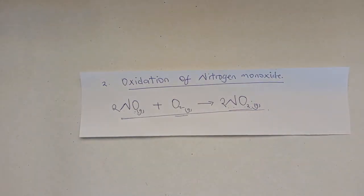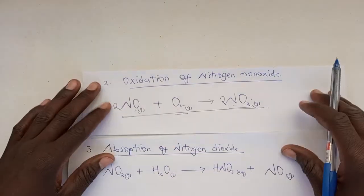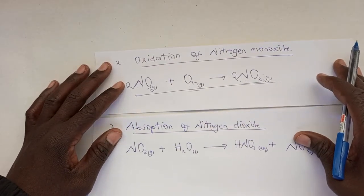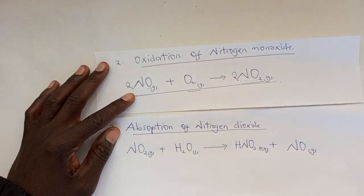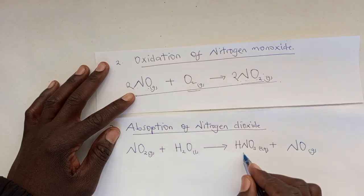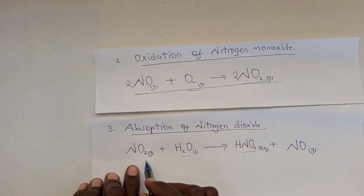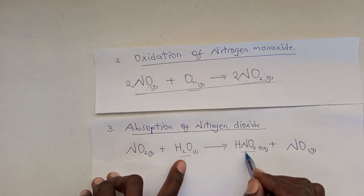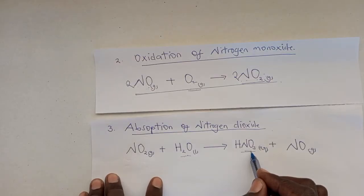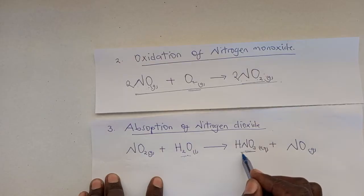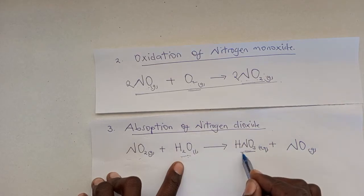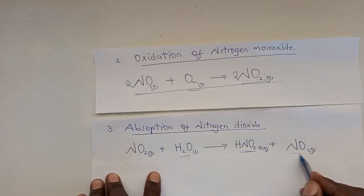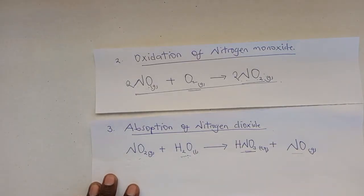In the third step, we use the nitrogen dioxide produced in the oxidation of nitrogen monoxide to react with water. This process is called the absorption of nitrogen dioxide. If a question asks how nitrogen dioxide produced from nitrogen monoxide and oxygen is used to produce nitric acid, you say by reacting it with water. Nitrogen dioxide is absorbed in water to produce nitric acid and nitrogen monoxide.